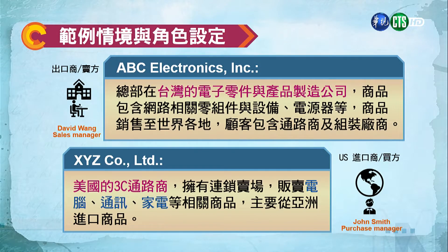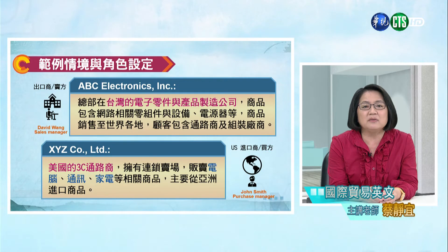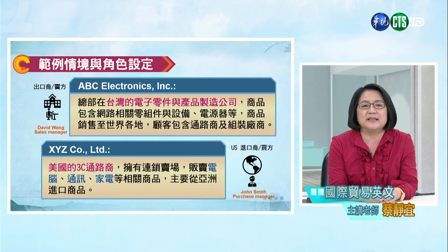我們的設定以美國為主要買方市場。買方的公司我們選定的是XYZ Code Ltd，這是一家美國的3C通路商，擁有連鎖賣場販售電腦、通訊等相關商品。他主要從亞洲進口商品，供應商大部分是亞洲國家。